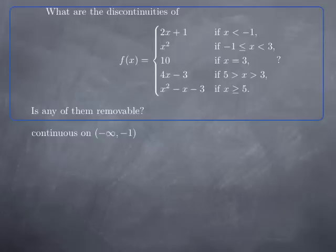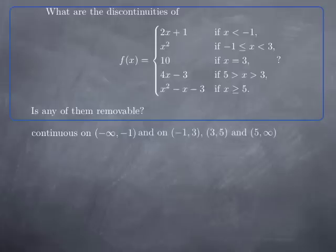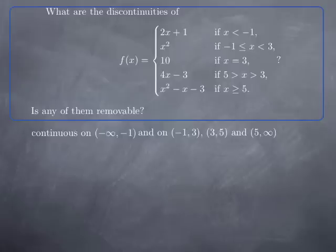The first observation is that on the open interval (-∞, -1), the function coincides with 2x + 1, a polynomial, so it is continuous there. Similarly, the function is continuous on (-1, 3) because it coincides with x², and on (3, 5) and (5, ∞) because it coincides with polynomial functions. So the only possible discontinuities are at x = -1, x = 3, and x = 5.